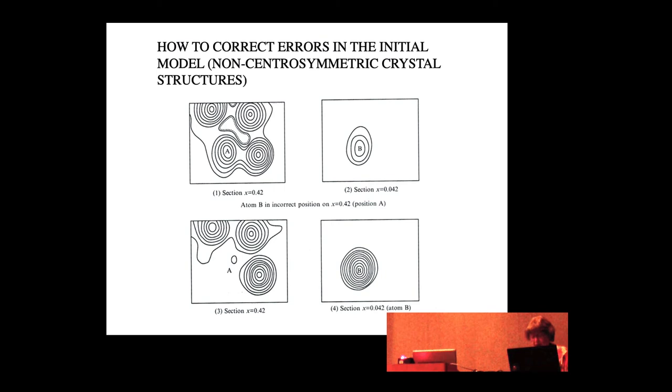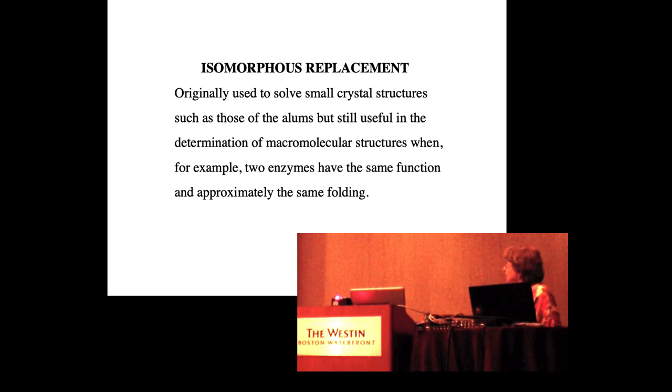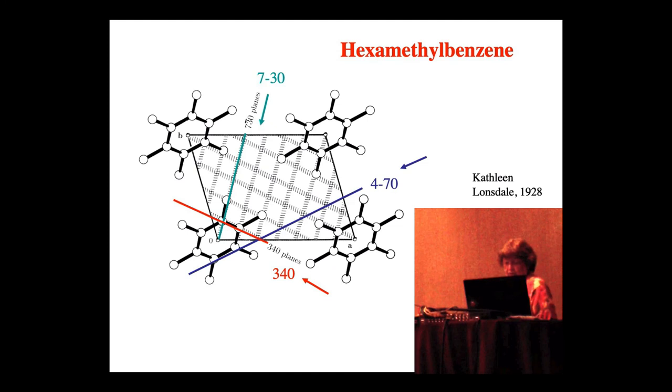So, then comes isomorphous replacement. It was important. It solves small structures, such as those of the allenes. And, of course, it's fallen into the use of protein crystallographers.